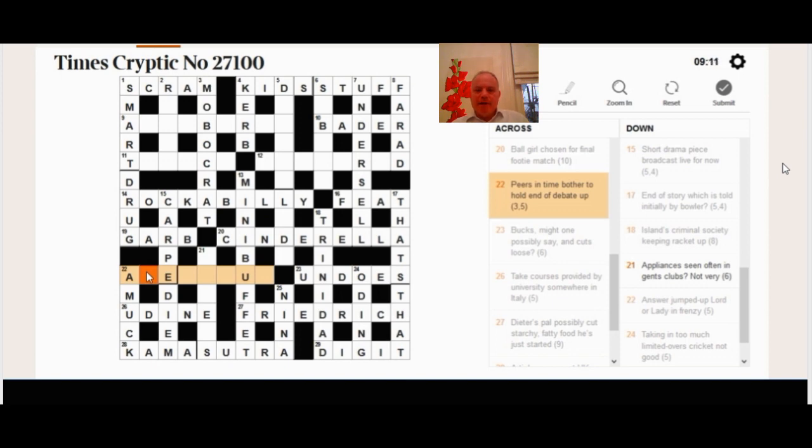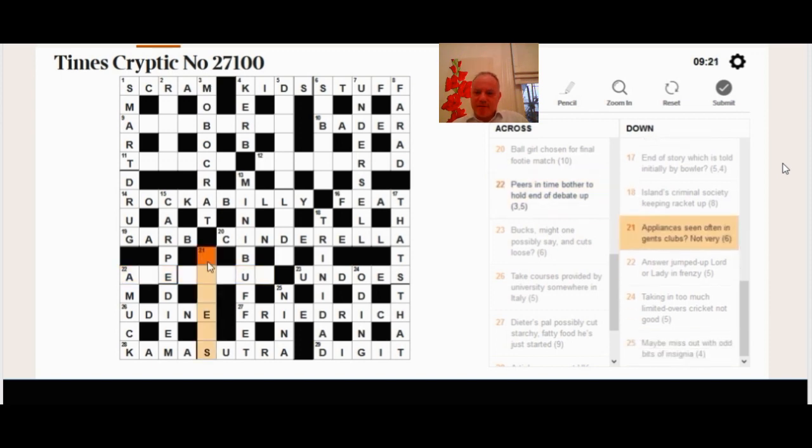Again and again, 22. Piers in time. I can tell you that's the definition, but how hard is that to spot? Piers in time, bother to hold end of debater. That's like a House of Lords reference, and it's certainly not. So I was really struggling I think with those two, 22 and 21 in the bottom left. And actually they're symmetric there. 6 and 12 in the top right were the ones I struggled with the most.